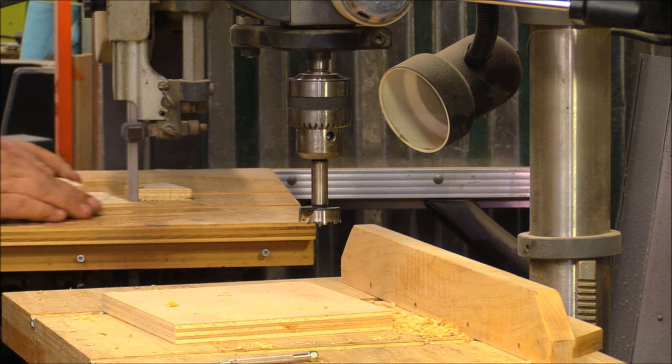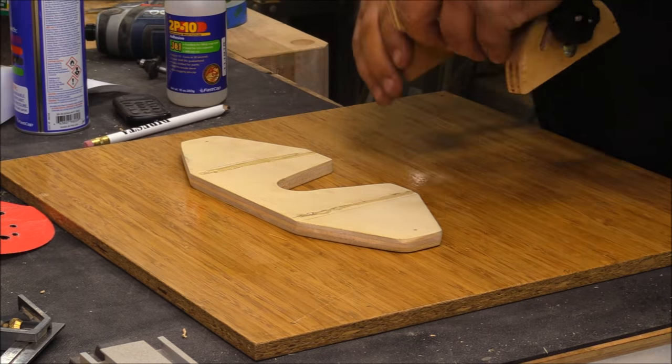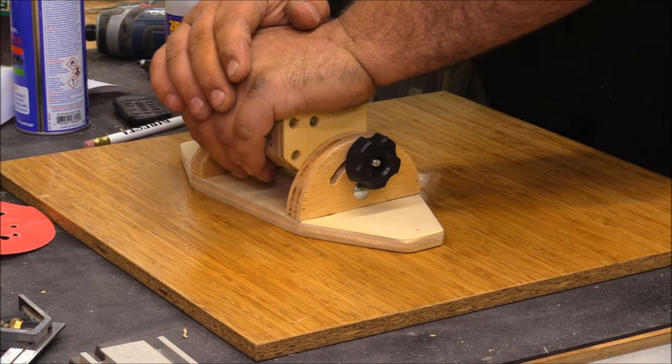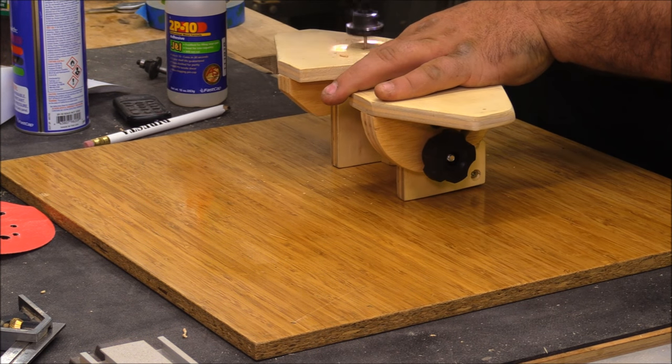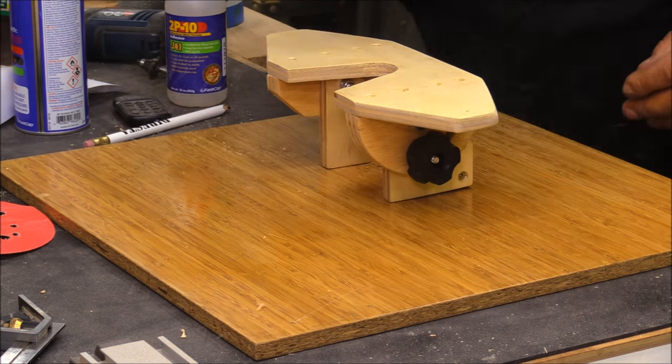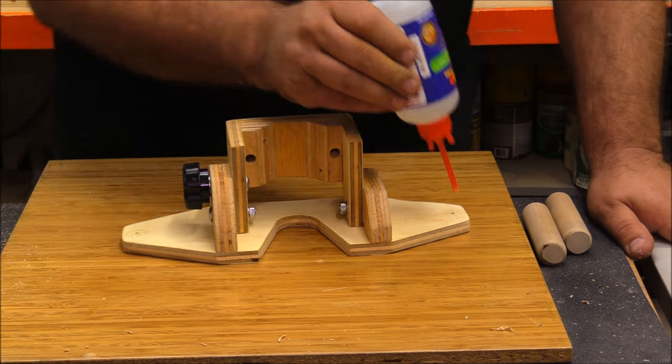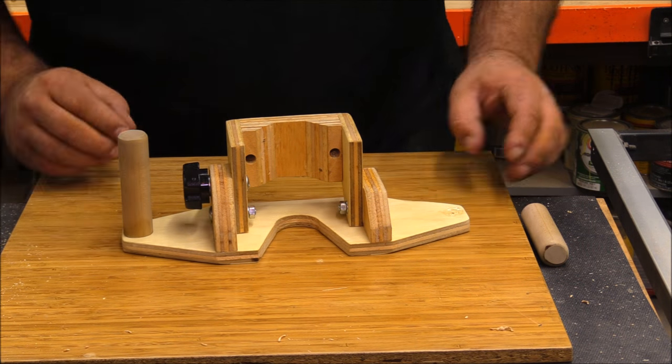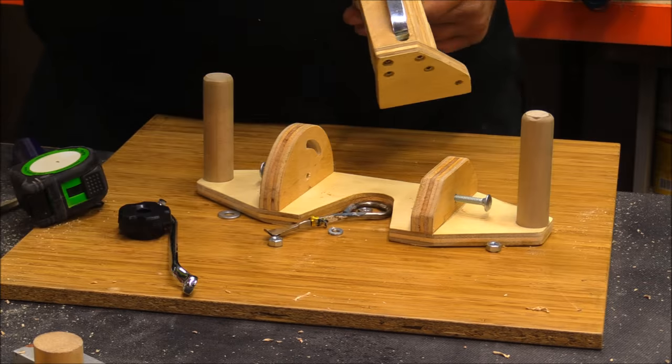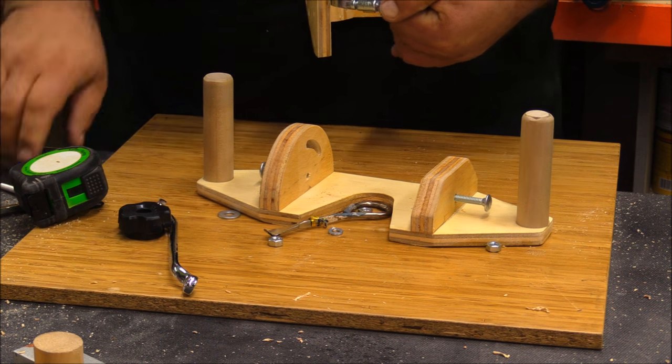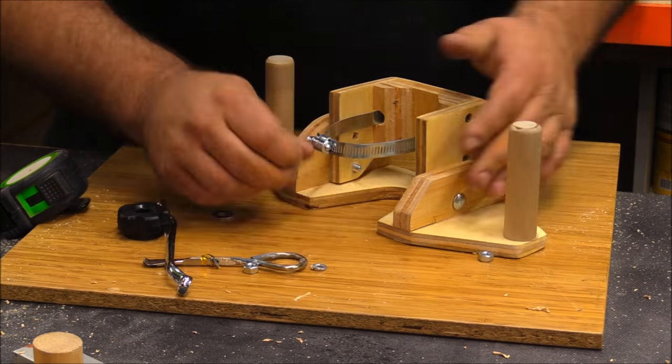The last couple steps here are to mount the router mount to the base, which is done again with 2P10. Flip it over and run some screws in. One of the final steps is to add the handles. I'm using one-inch dowel here, which is comfortable. I like to have the handholds there for better control. With all that done, I took the router mount back out and added the hose clamp to capture the trim router.